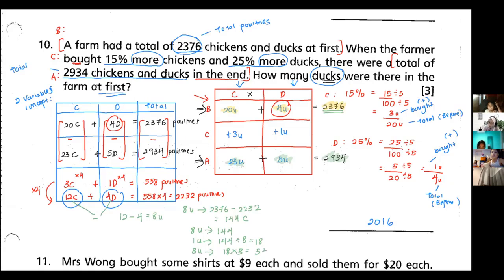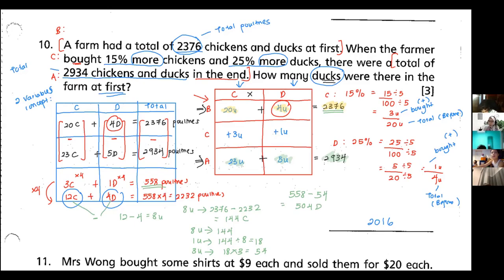We look back at the difference total of 558 and subtract: 558 minus 54 = 504. This represents 1 unit of ducks. Going back to the table, I want 4 ducks at first, so 4 ducks = 504 × 4 = 2016. There were 2016 ducks in the farm at first. That's the answer.